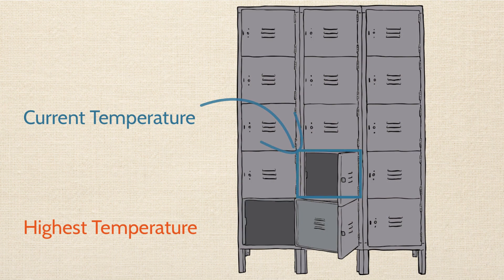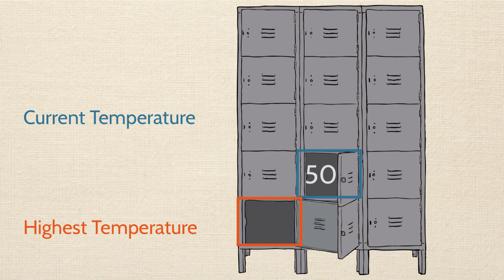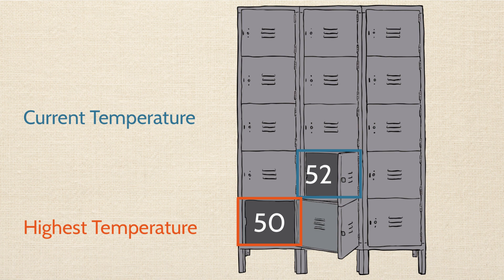So I'm going to name two lockers: one called 'current temperature' and another called 'highest temperature.' Let's say the first reading of the day is 50 degrees. I take the number 50, open up the current temperature locker, and put in 50. At the same time, I also open up the highest temperature locker. There's nothing in it yet, so 50 is larger than nothing — I go ahead and put 50 in the highest temperature locker too. Now both lockers have the number 50. Sixty minutes later, I read the temperature again and it's risen to 52 degrees. I open up the current temperature locker and put in 52, overwriting 50. I also peek inside the highest temperature locker, see that 52 is hotter than 50, and replace that value as well.